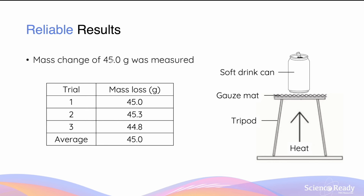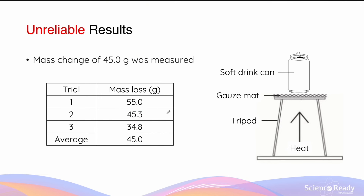Let's go back to the examples used earlier. In the experiment where I am calculating the mass loss in a soft drink can after heating, to determine the composition of carbon dioxide in a soft drink, I repeated this experiment three times to arrive at an average value of 45 grams of mass change. If we eyeball the values of each trial — 45.0, 45.3, and 44.8 — we can see that these values are very similar to one another and are not far from the average value.